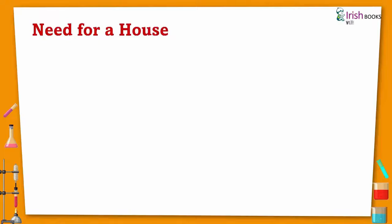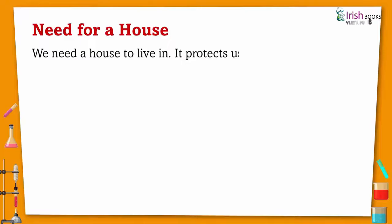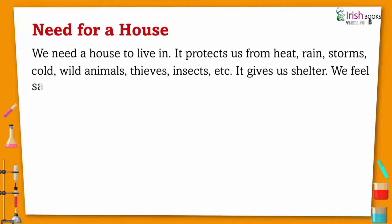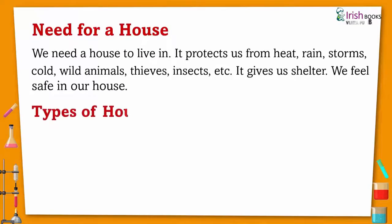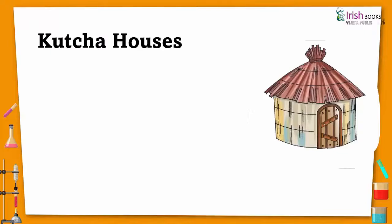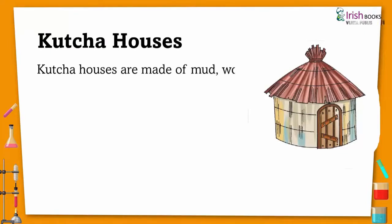Need for a House. We need a house to live in. It protects us from heat, rain, storms, cold, wild animals, thieves, insects, etc. It gives us shelter. We feel safe in our house. There are two types of houses: Kacha houses and Paka houses. Kacha houses are made of mud, wood, bamboo, clay, and straw.